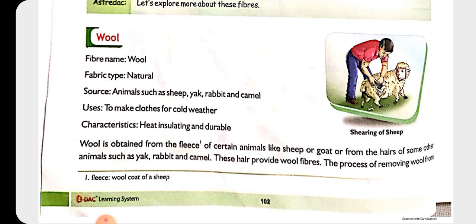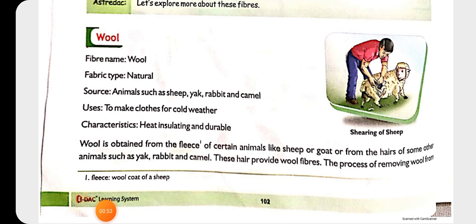Wool is also a natural fiber because we get it from animals. The sources of wool include sheep, yak, rabbit, and camel. The uses of wool are to make clothes for cold weather. The characteristics of wool are that it is heat insulating and durable.